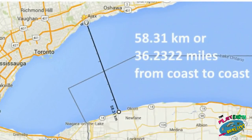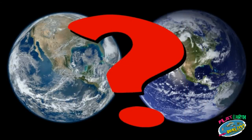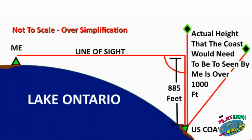I learned what the curvature of the Earth is supposed to be exactly at that distance, and according to the people that believe in the sphere, the coast should have been buried below my ability to see it by almost 900 feet. That part of the New York State coast had a top elevation of less than 300 feet, so that left at least a huge 600-foot discrepancy. Was something really wrong with the reality that they've been selling us ever since we were born? At first, I truly thought disproving the flat Earth would be rather easy.